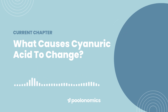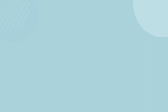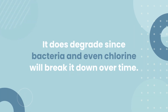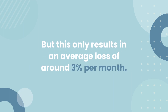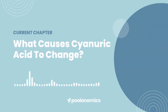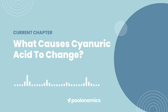On the other hand, it's notoriously difficult to lower cyanuric acid in a pool, so it's unlikely you'll be caught off guard by a low reading. It does degrade, since bacteria and even chlorine will break it down over time, but this only results in an average loss of around 3% per month. Finally, it goes without saying that topping up your pool with fresh water will dilute and lower your cyanuric acid level, as will rainwater.